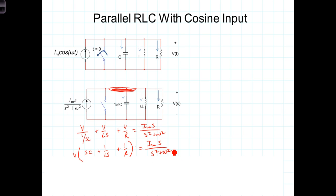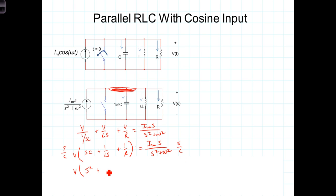Factoring out V and simplifying, we get V times (SC plus 1 over LS plus 1 over R) equals I_sub_M times S over S squared plus omega squared. Let's work to get this into standard form where the coefficient in front of the highest power of S is 1. Multiplying both sides by S over C, we get V times (S squared plus 1 over RC times S plus 1 over LC). We recognize that as the term from the characteristic equation. On the right-hand side, we have I_sub_M over C times S squared over S squared plus omega squared.